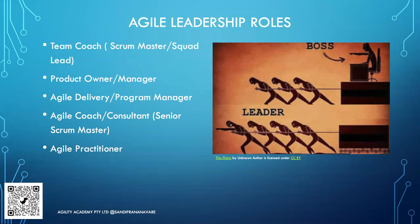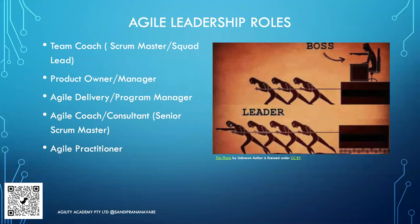The next two roles — Agile Program Manager or Delivery Manager, and Agile Coach/Consultant — are at the team-of-teams or group level. As a Delivery Manager or Program Manager in an agile environment, you support product owners and Scrum Masters based on your organizational structure and carry delivery and program-related responsibilities. An Agile Coach or Consultant is an experienced Scrum Master who has worked with multiple frameworks and can guide and coach Squad Leads, Scrum Masters, and Product Owners. The Agile Practitioner is an agile team member with subject-matter expertise — architect, DevOps lead, etc. — who still needs foundational agile knowledge.